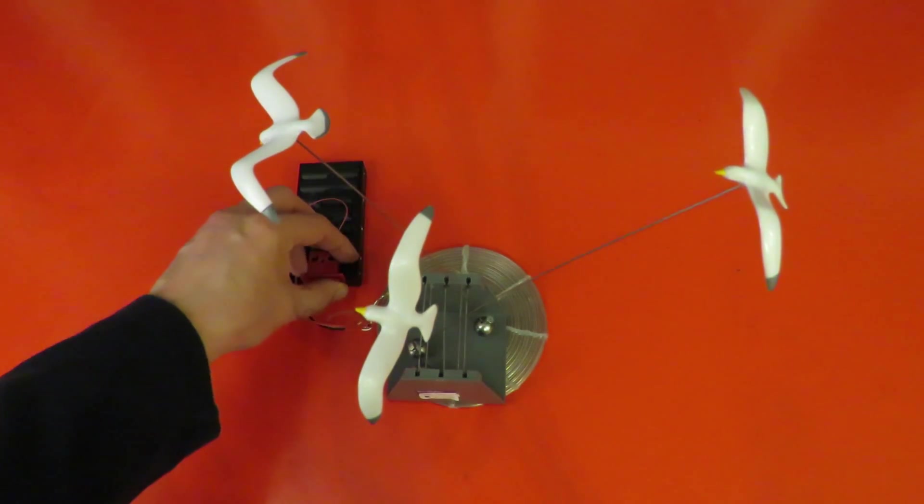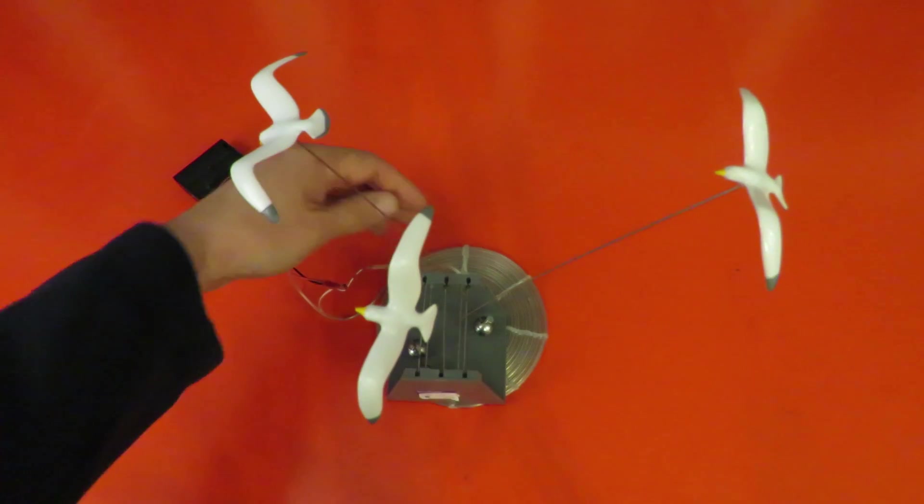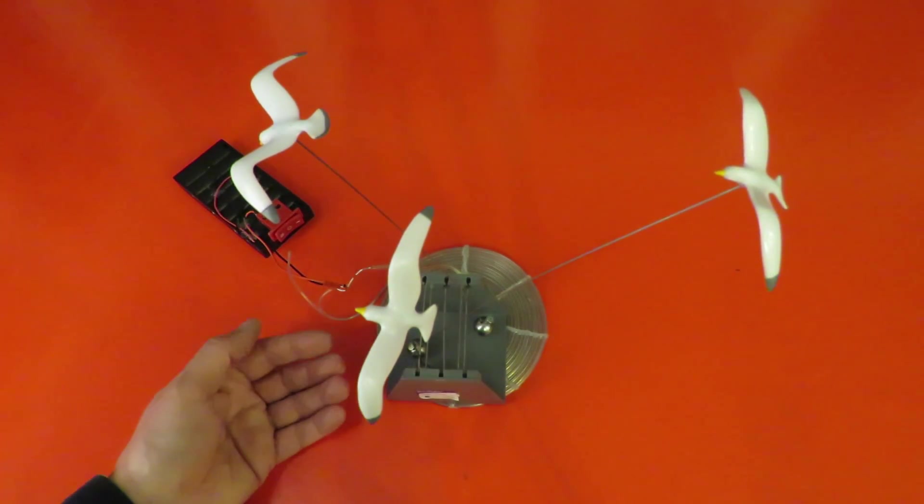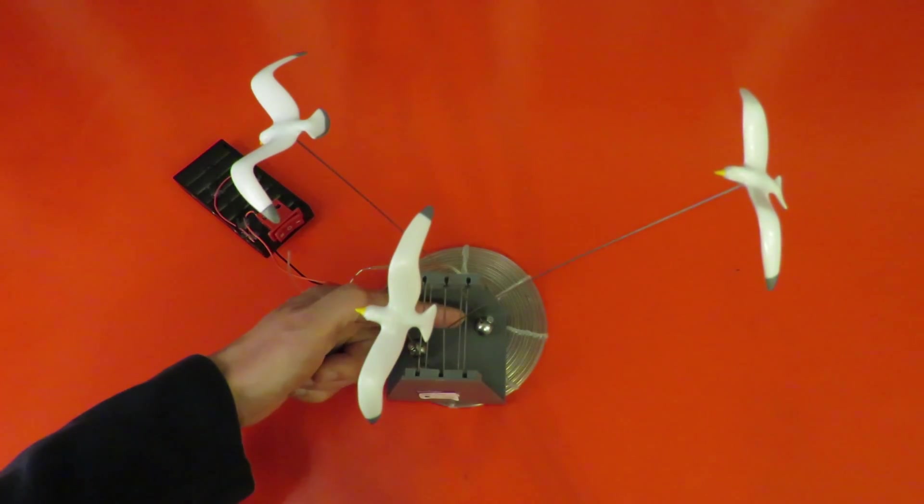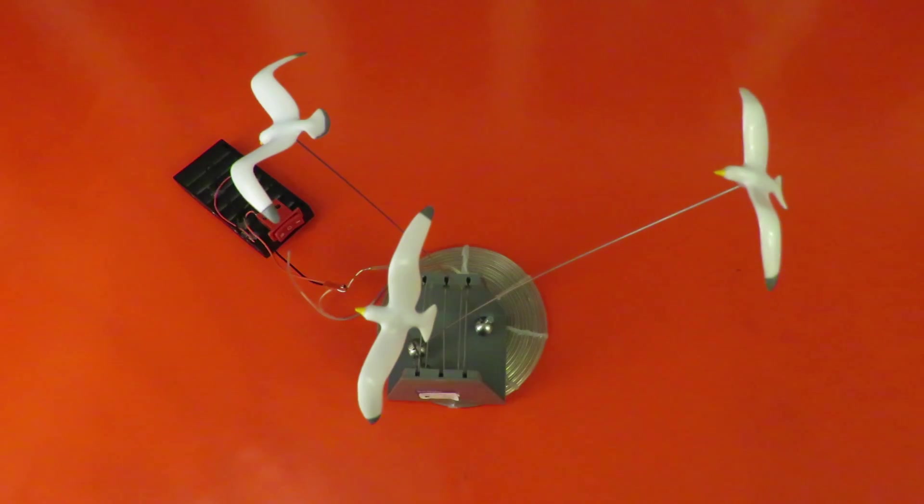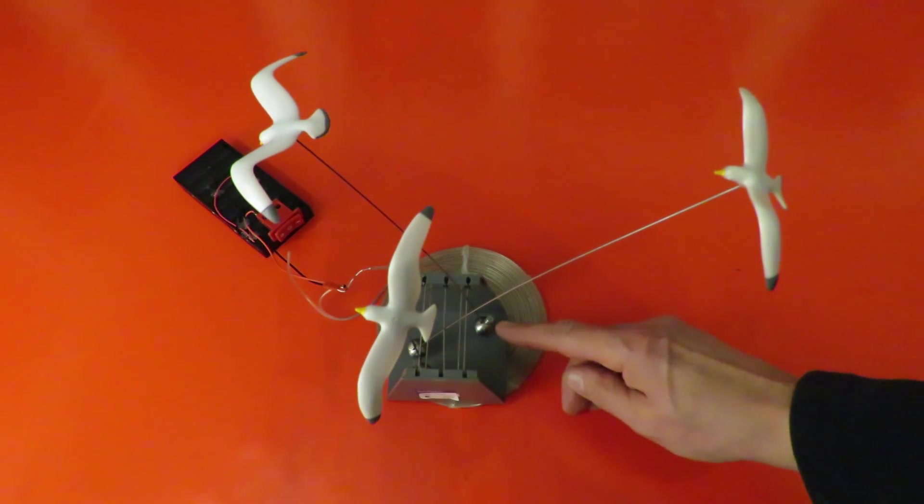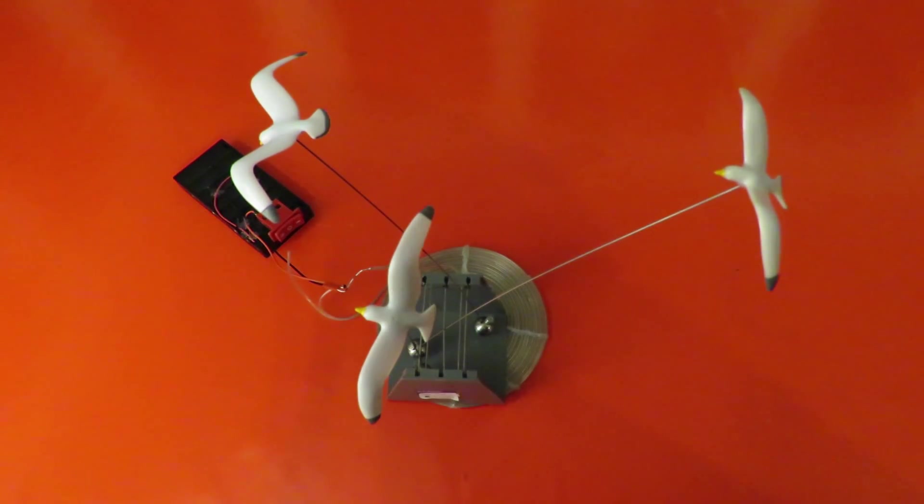So passing current through the wire is creating a magnetic field, and that's pushing the magnets or pulling them, whichever way around it is. I'm not even sure which way up I put the magnets. Let's go in close up so you can see.